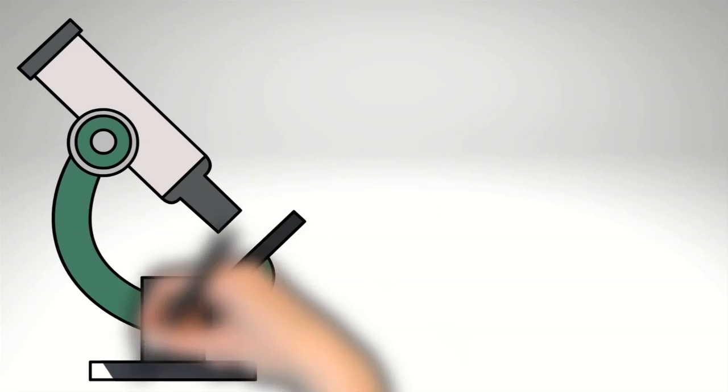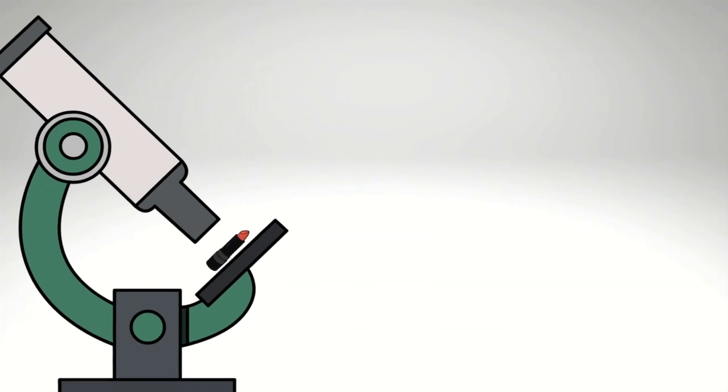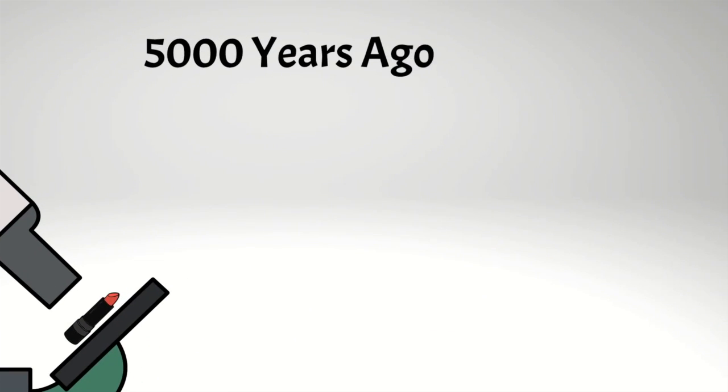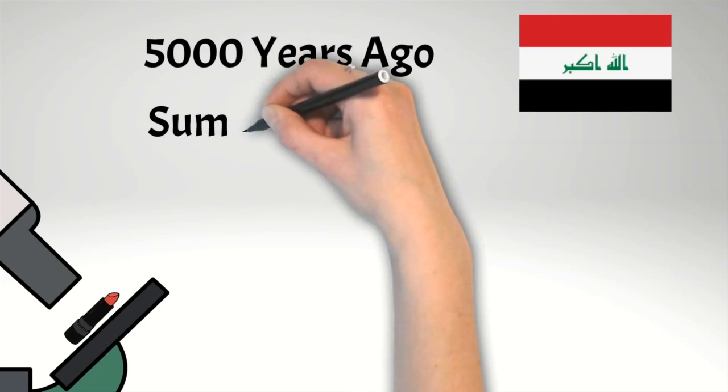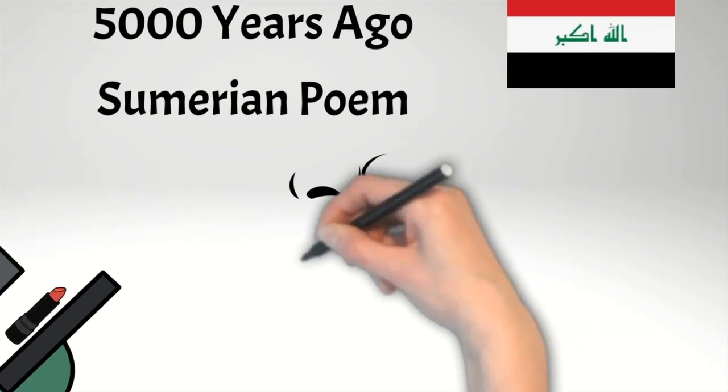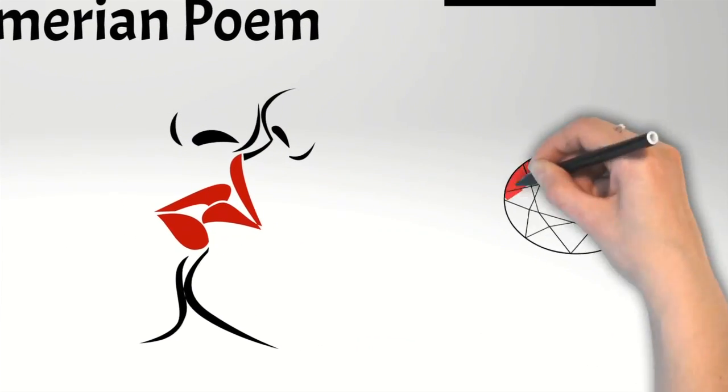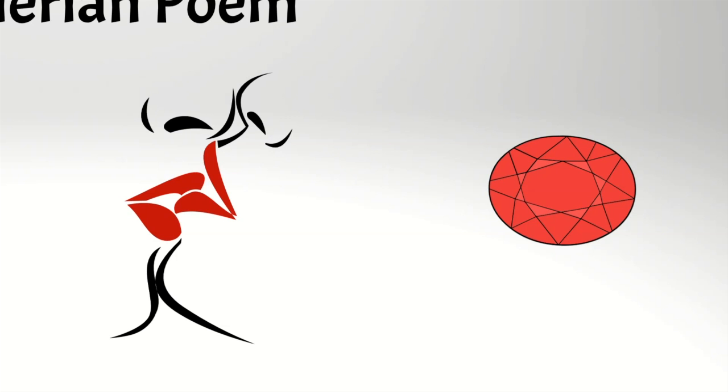One of the earliest pieces of evidence of red lipstick use was approximately 5,000 years ago, and it comes from the ancient city of Ur in Mesopotamia, modern-day Iraq, where a 5,000-year-old Sumerian poem describes a woman's lips as redder than precious stones, which some scholars believe is a reference to the use of red lipstick.